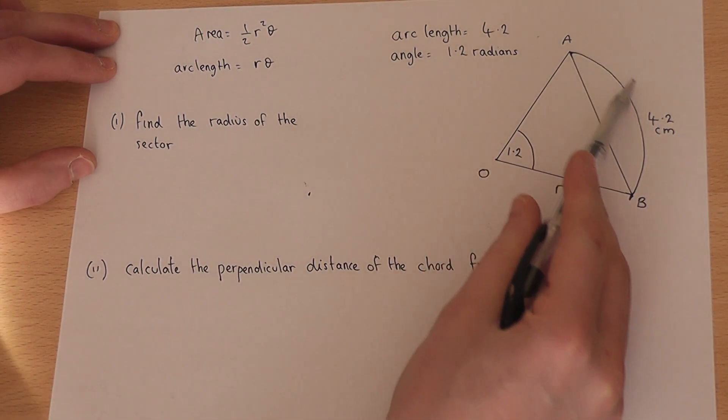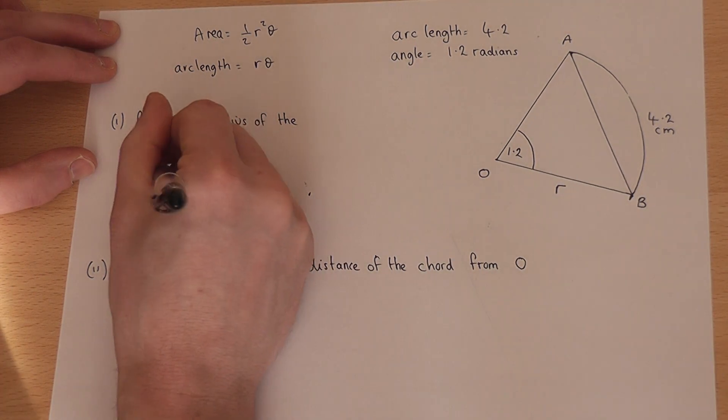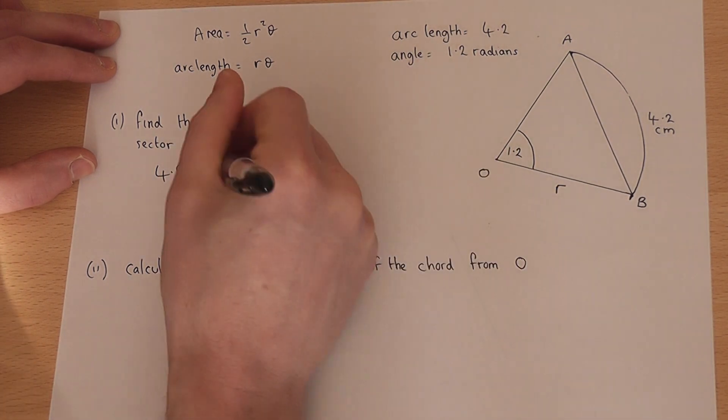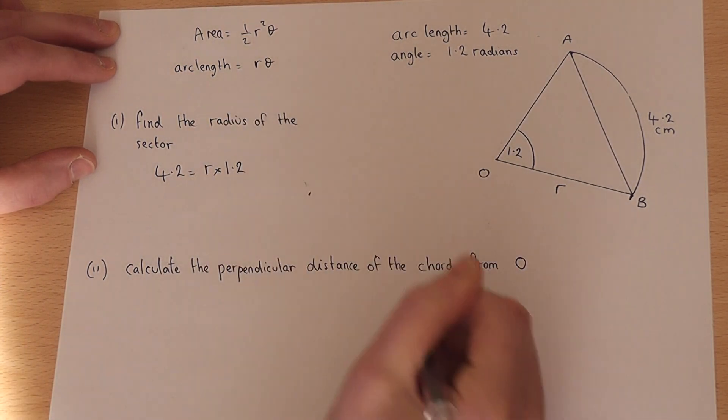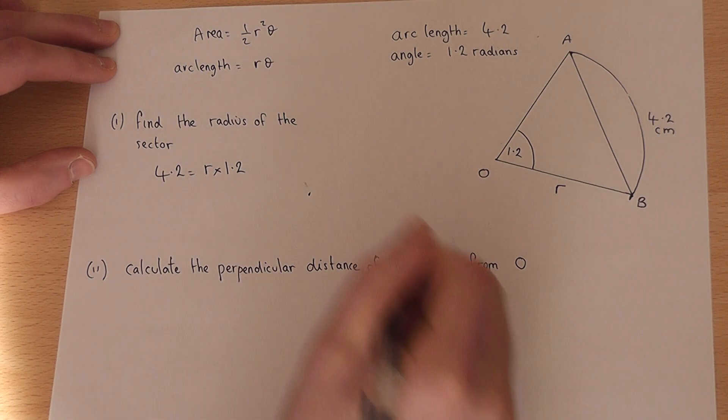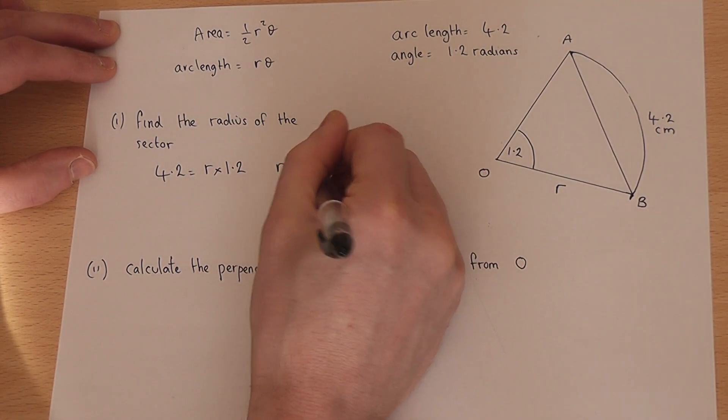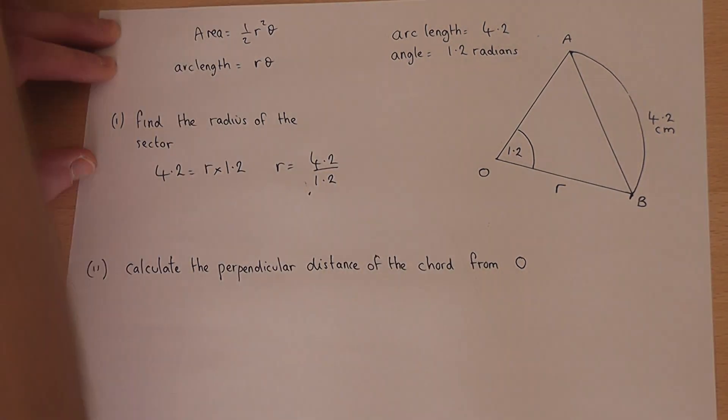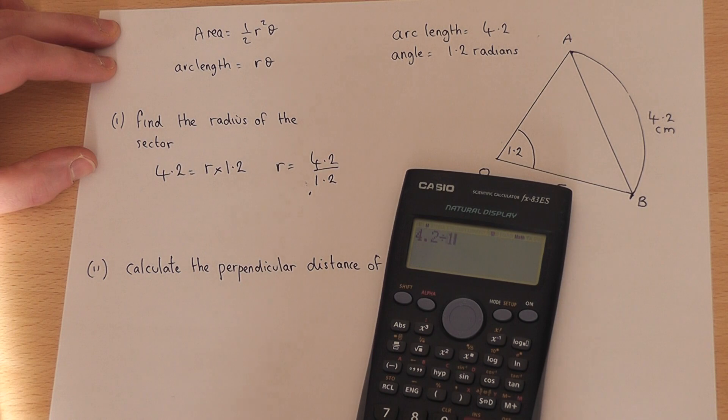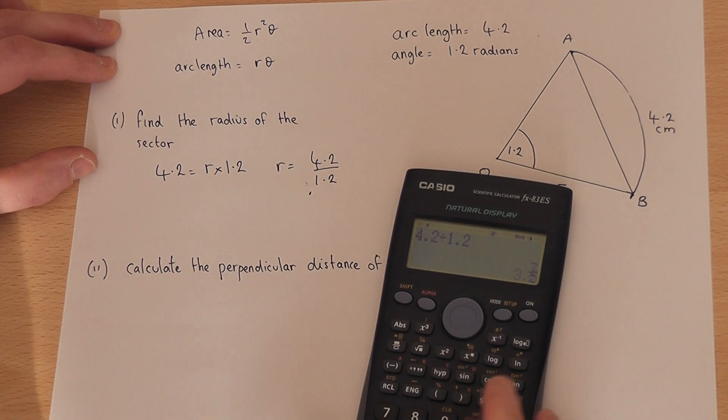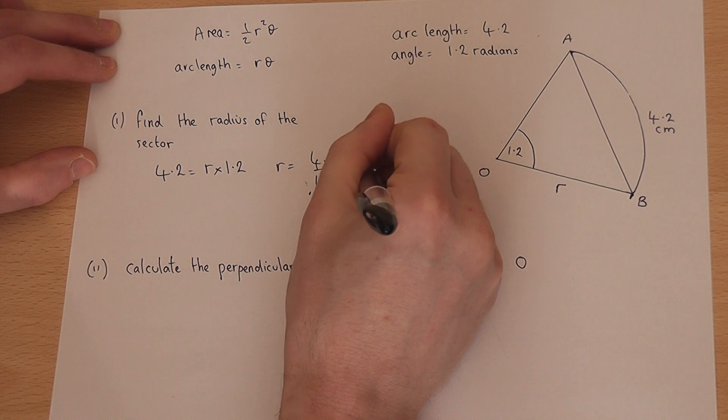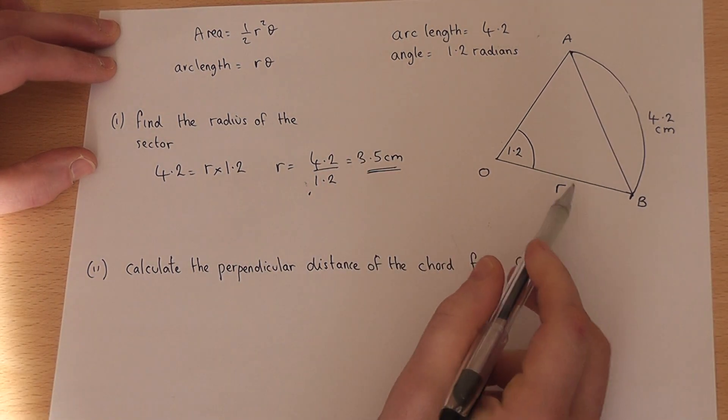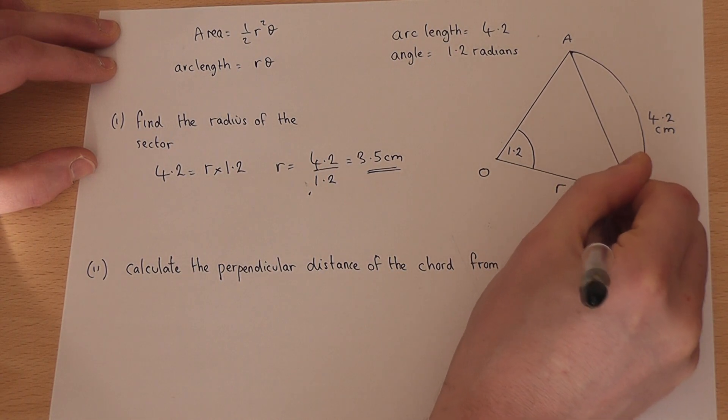Now we know the arc length is 4.2, so we know that 4.2 is equal to r times the angle 1.2. So to find r we just have to divide 4.2 by 1.2, so 4.2 divided by 1.2 gives us 3.5cm. So the radius is 3.5cm.